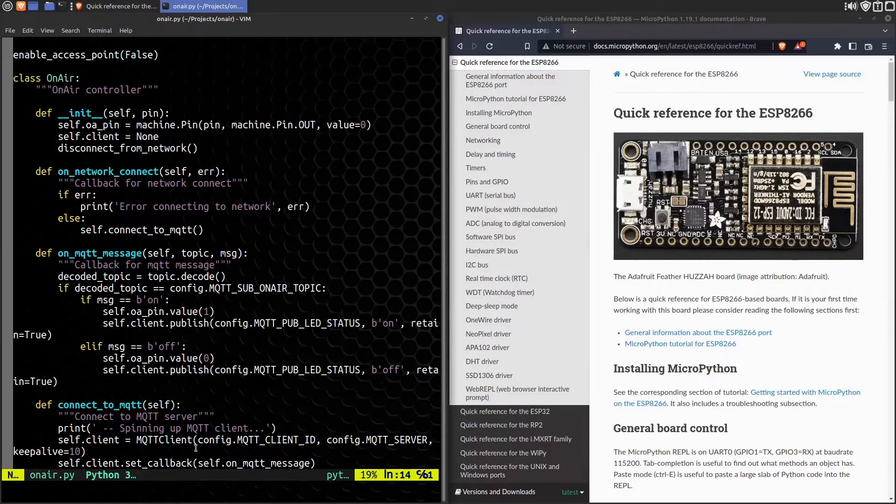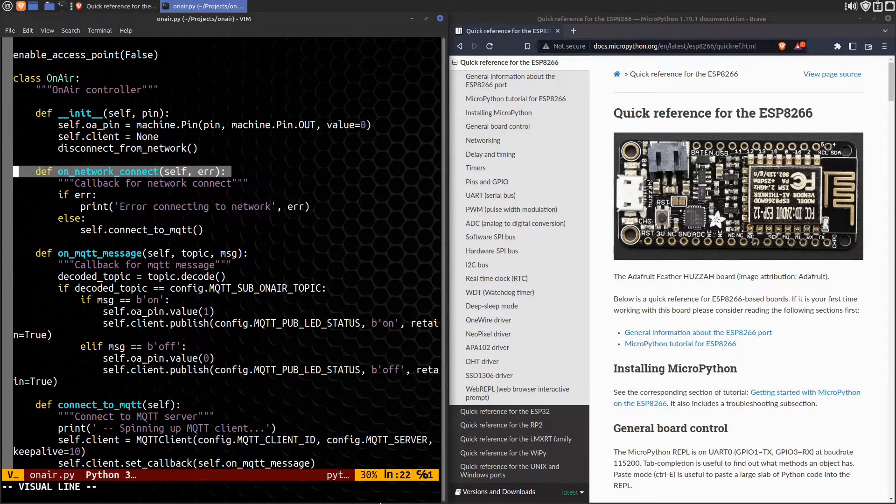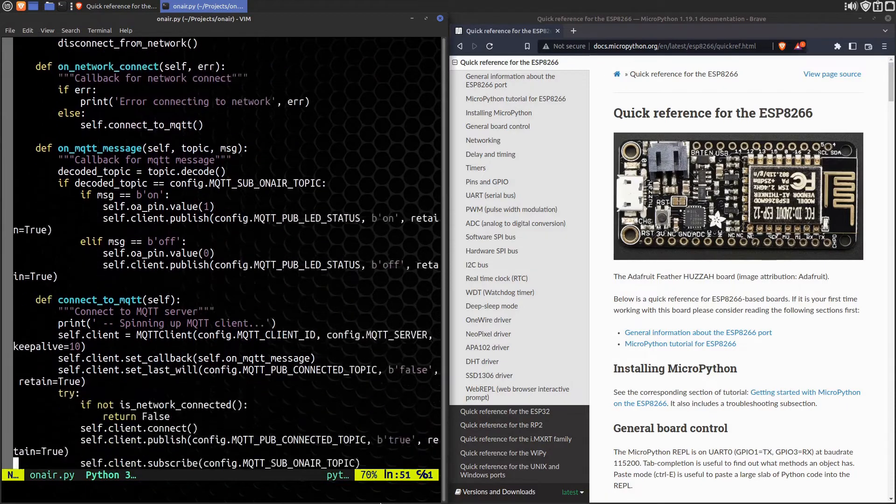With the control lines worked out, I wrote the firmware for the controller using MicroPython. It's pretty simple. It just connects to the network, then to MQTT, and it subscribes to the control messages.